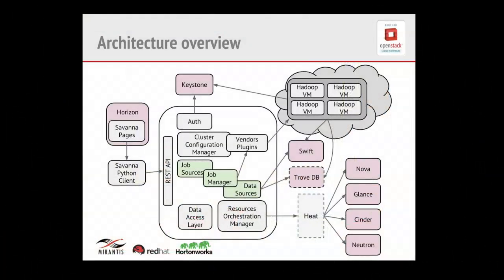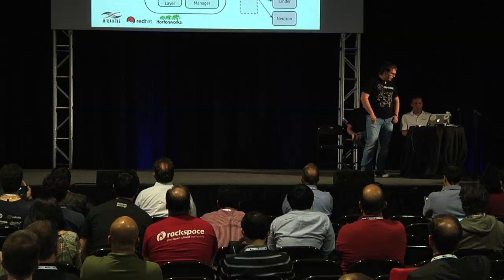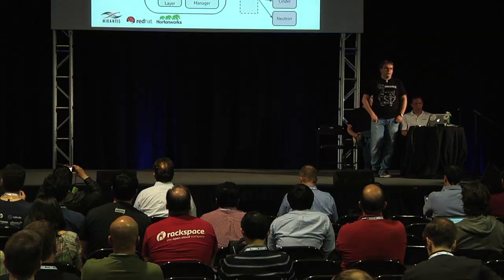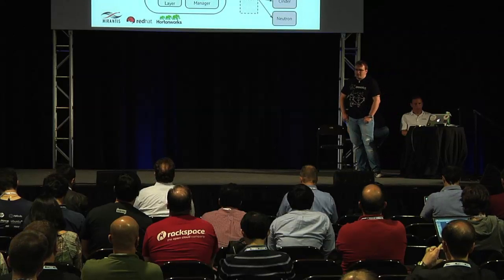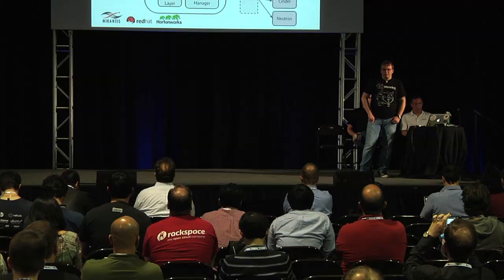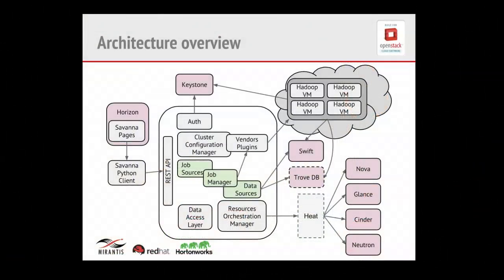Looking at the architecture: we have a Horizon plugin that provides users the ability to control and operate the Sahara service using the OpenStack dashboard. It's currently implemented as a plugin for the dashboard, and we plan to merge it into Horizon during the Juno cycle. We use Keystone for authentication and HEAT for resource provisioning — instances, volumes, networks, etc. Additionally, a big piece of Sahara is a filesystem implementation for Hadoop that supports accessing data in Swift directly without any proxies, so you can specify data sources in Swift and use them from the Hadoop cluster provisioned by Sahara.